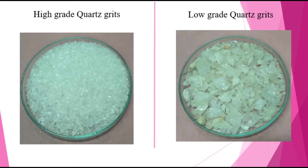After producing grids, we have high grade quartz grids and low grade quartz grids. High grade quartz grids are at 99% plus purity, while low grade quartz purity is below 99% plus level.